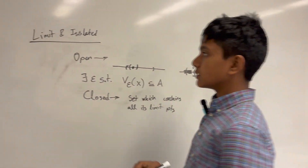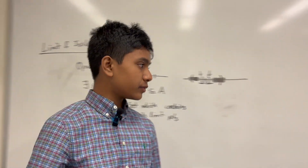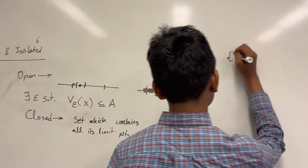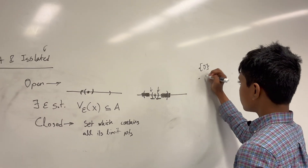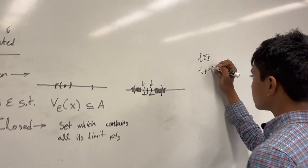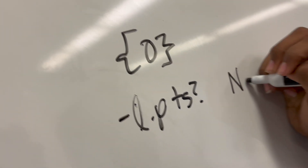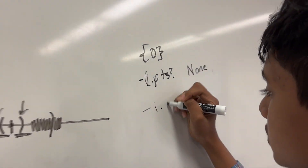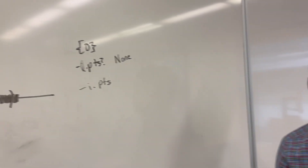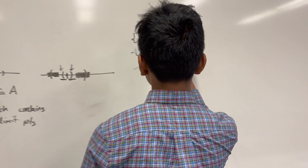But first, let's talk about isolated points. What is an isolated point? Well, it's any point in the set which is not a limit point. So let's go over some examples. What about the set which just contains zero? What are the limit points here? Well, there are none of course. And what about the isolated points? An isolated point is any point in the set which is not a limit point, so in this case it's zero.